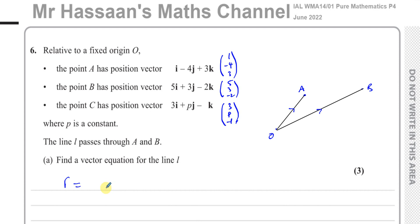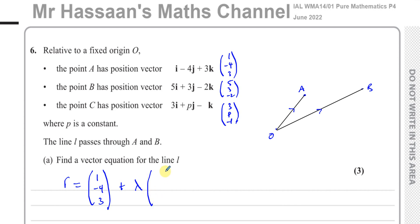Now I can write the vector equation. For the position vector part I can use either A or B — I'll choose A, giving (1, -4, 3). Then I add a scalar lambda times the direction vector. To find the direction, I join A and B — that line is L. The vector from A to B will give me the direction of the line.